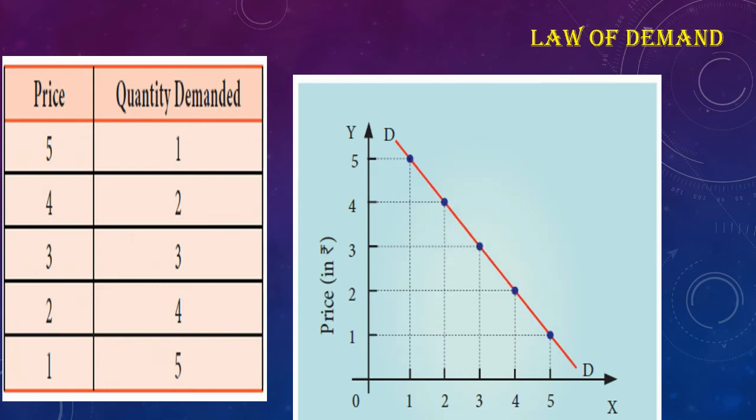Sketching the schedule into a diagram: the x-axis is the quantity demanded and the y-axis represents the price of the commodity. DD is the demand curve, which has a negative slope — negative slope meaning it slopes downwards from left to right. This indicates that when price falls, demand expands, and when price rises, demand contracts.